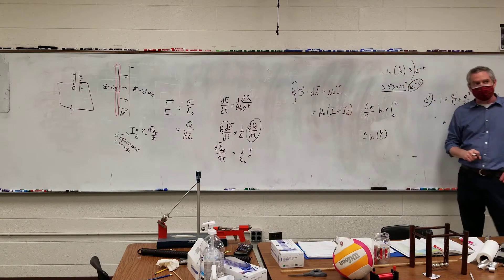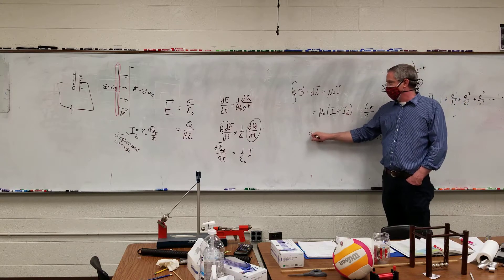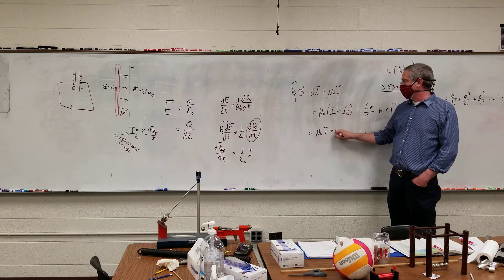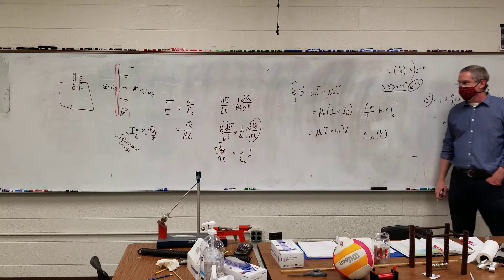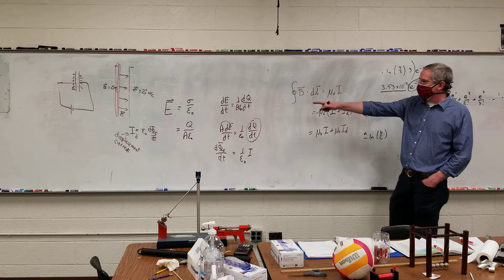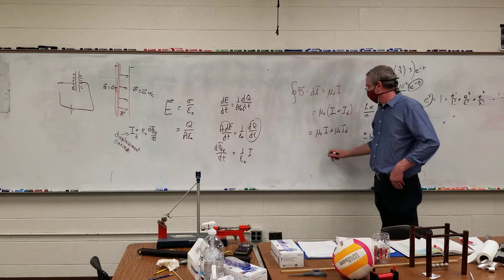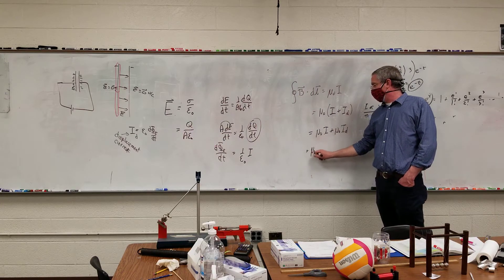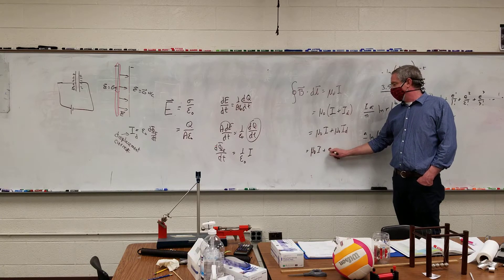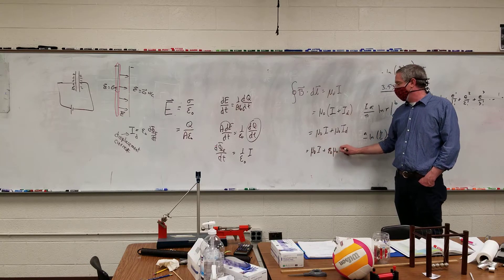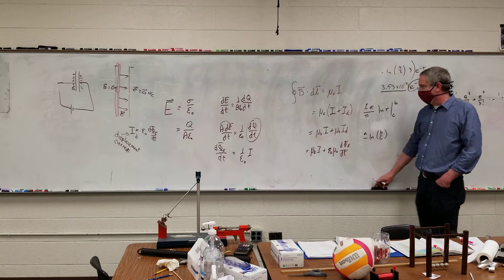So I can expand that to I plus I sub D. So we have the more traditional current, and then we have this displacement current. So that's mu-naught I plus mu-naught I sub D. And I sub D is epsilon sub-naught mu sub-naught d phi E dt.